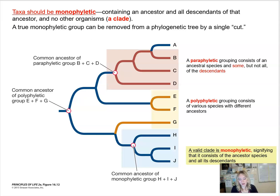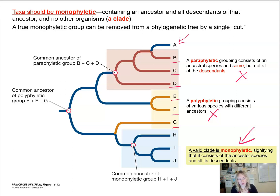When we build phylogenetic trees, the goal is to have a monophyletic grouping, because all other groupings do not accurately reflect evolutionary history. In a paraphyletic grouping, we have a common ancestor and some but not all descendants — one is excluded. In a polyphyletic grouping, we have various species from different ancestors. The ideal clade is monophyletic: one common ancestor and all of its descendants are included.